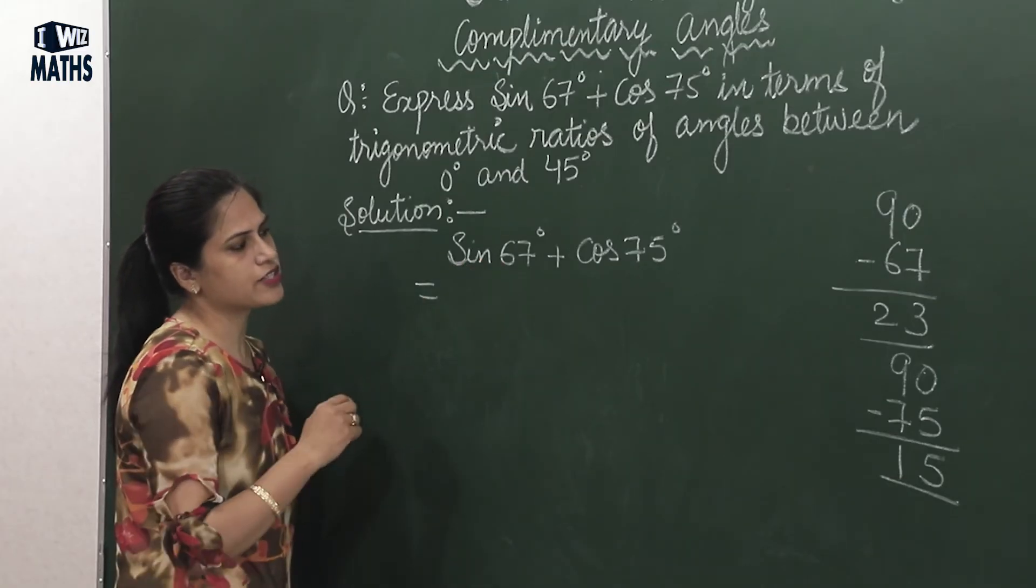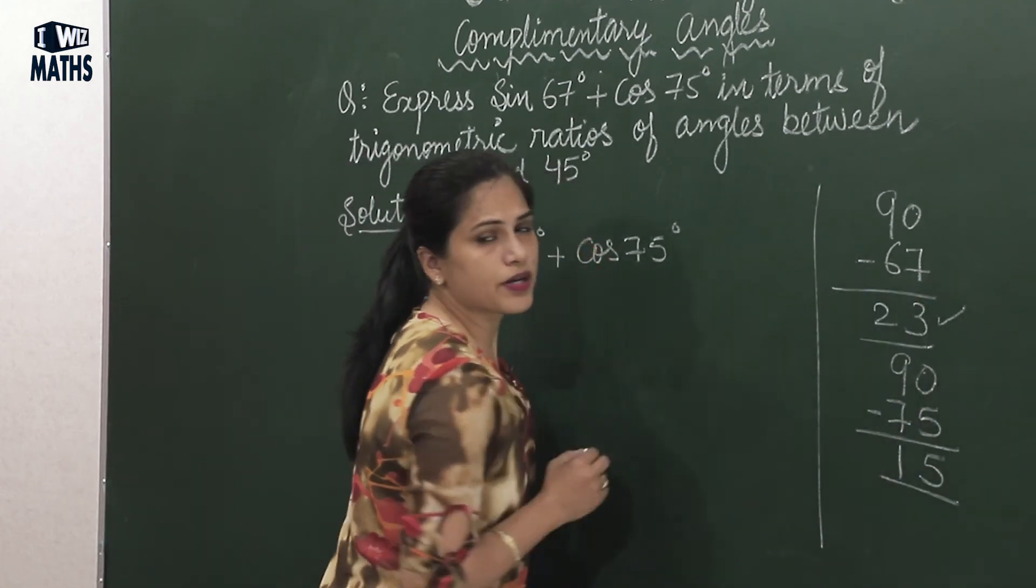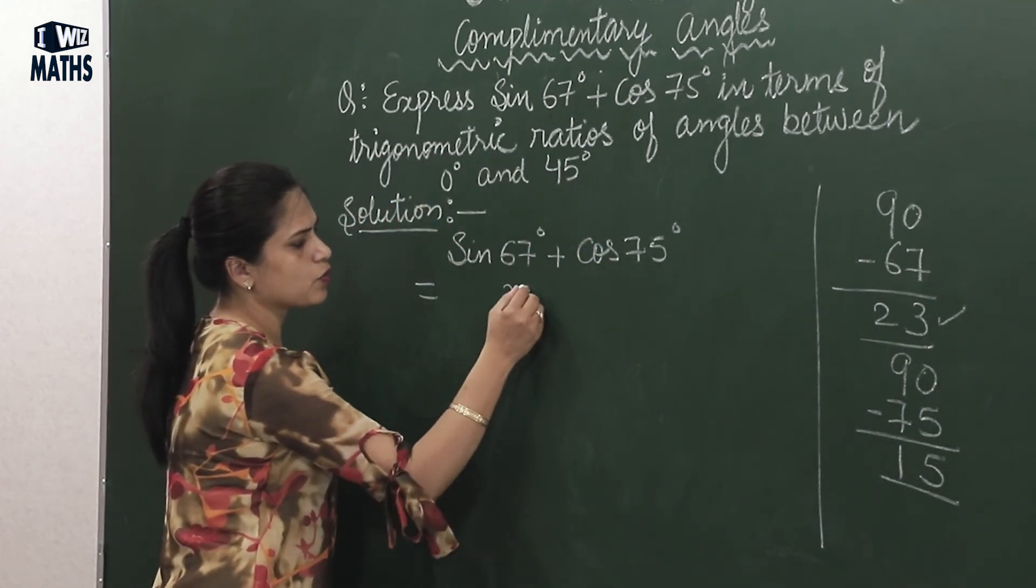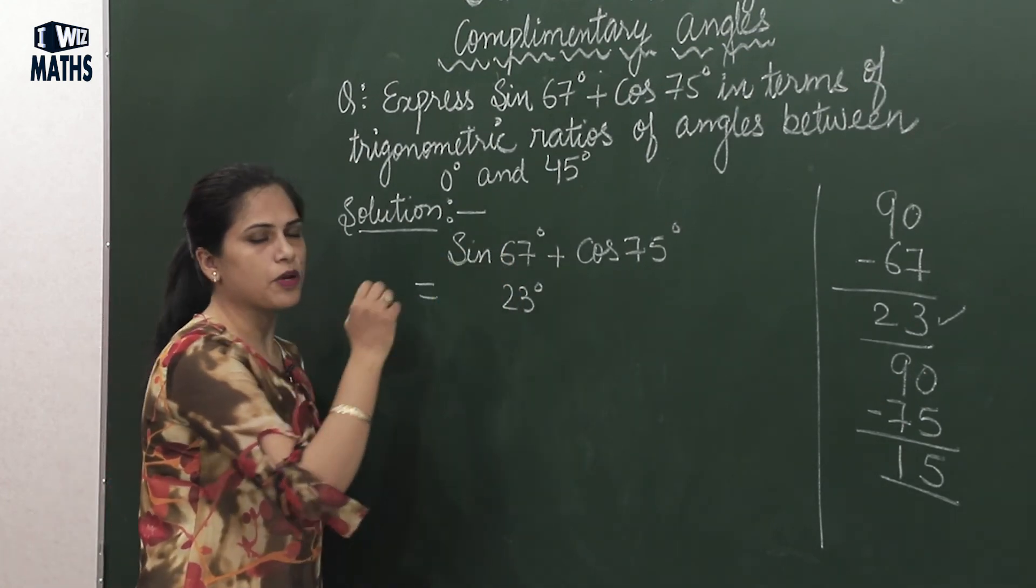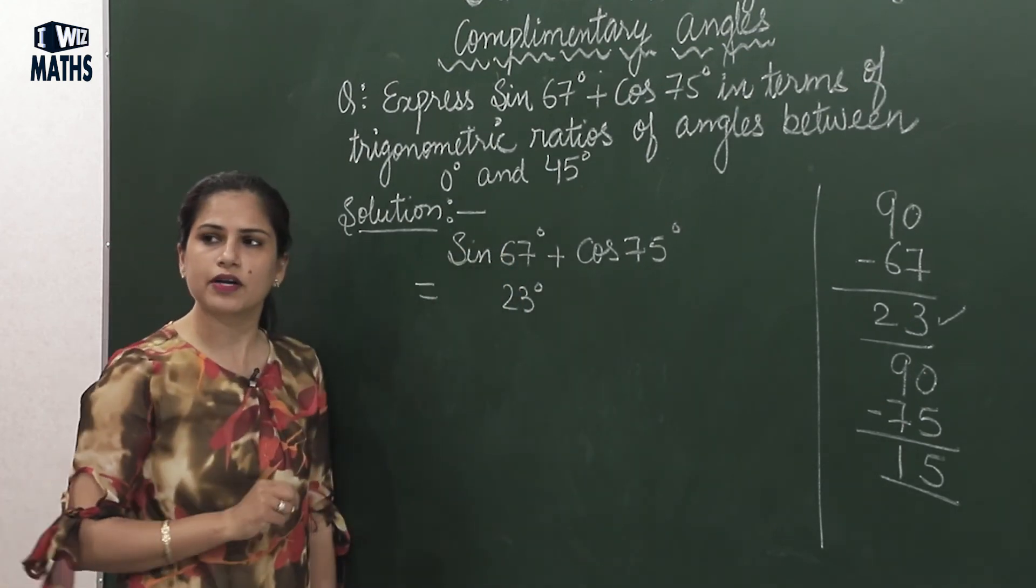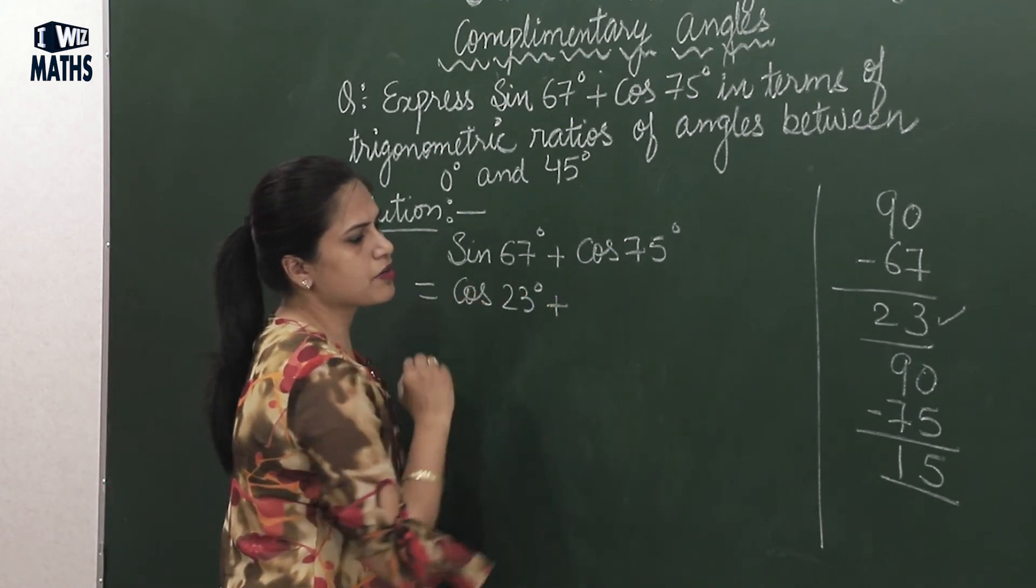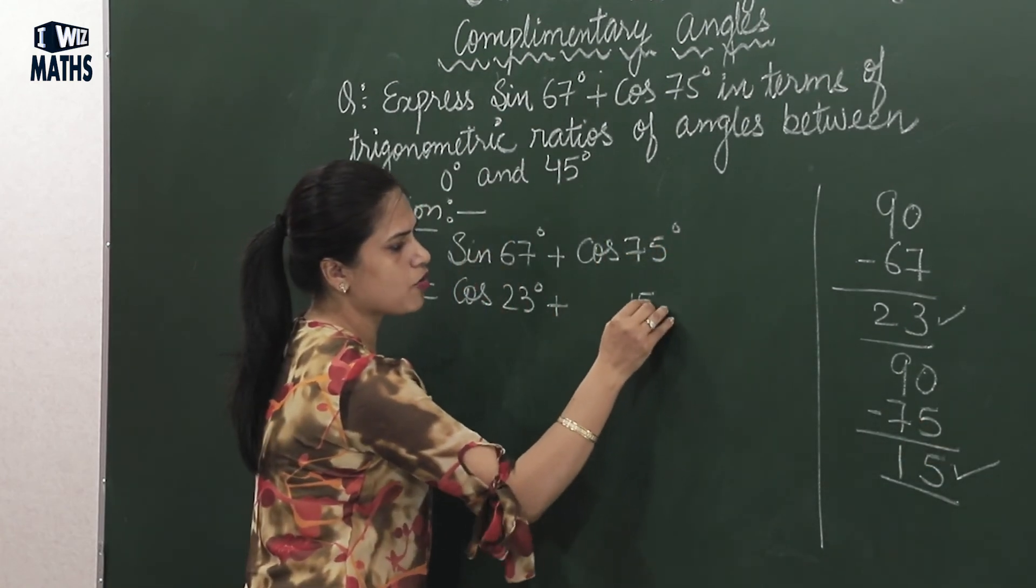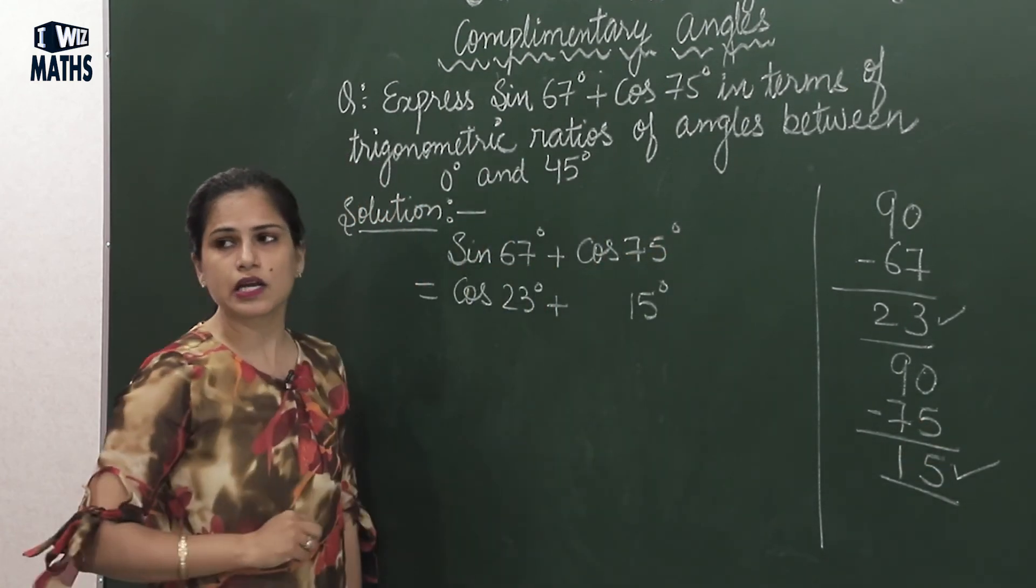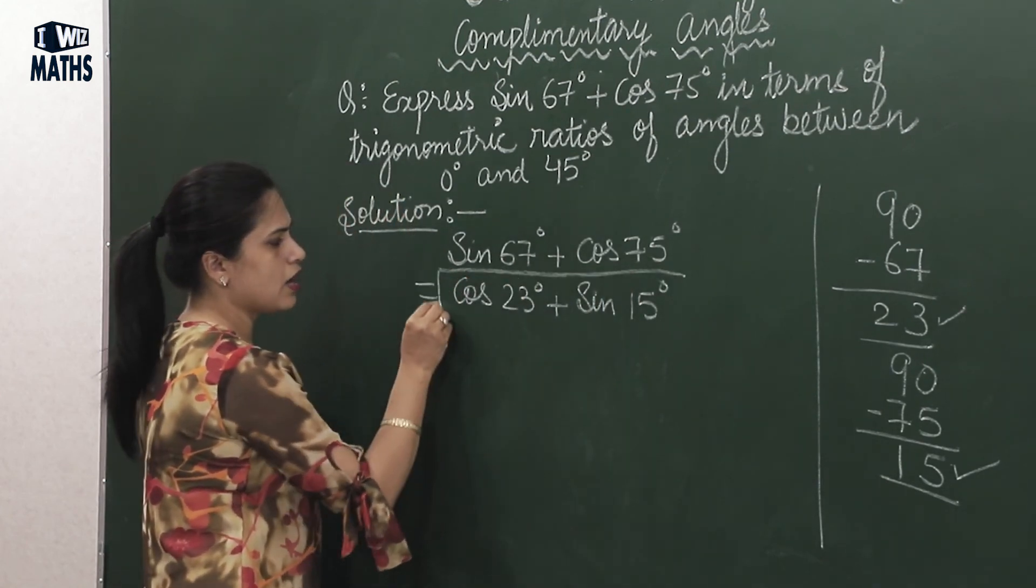So here, sin 67 - I don't want 67, so I'll write its complementary. Its complementary is 23°. So if I'm writing 23°, now I can't write sin again. I've written 67's complementary, so I need to write sin's complementary as well, which will be cos. Plus, 75's complementary is 15°. If I've written 75's complementary as 15, I can't write it in cos, I'll write here sin. So here is our answer.